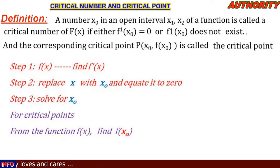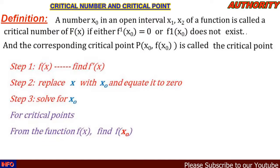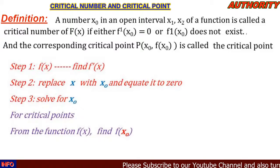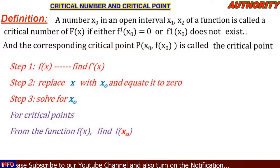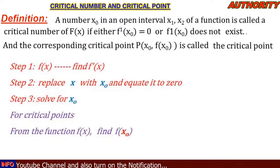Once you solve for x-naught you obtain one or more values — those are the critical numbers. To find the corresponding critical point, plug the critical number back into the original function f(x). The result gives you the critical point corresponding to that critical number.